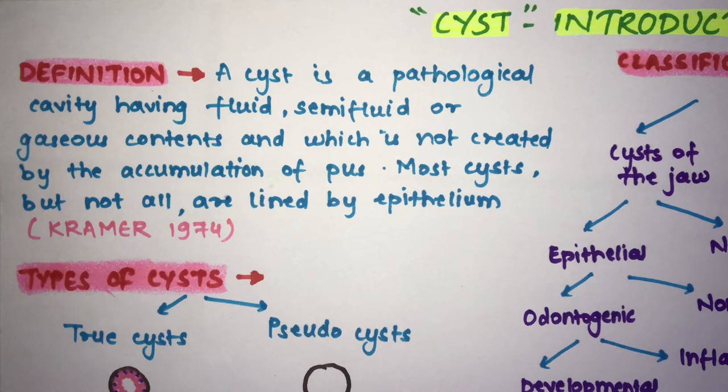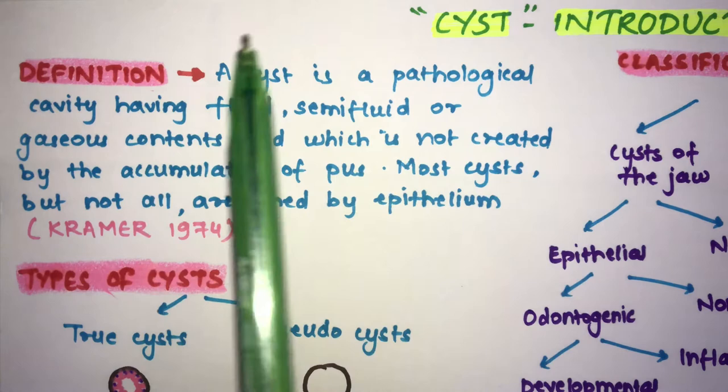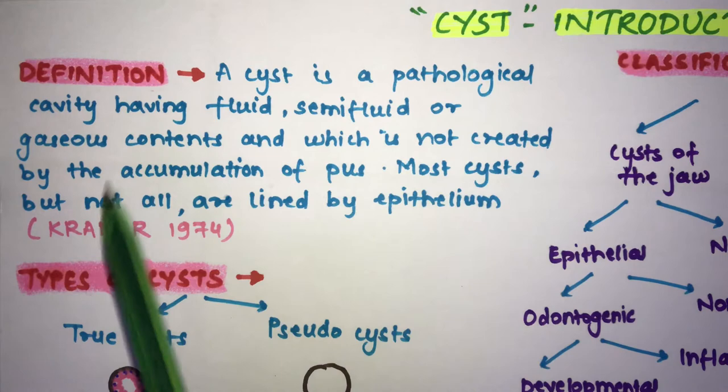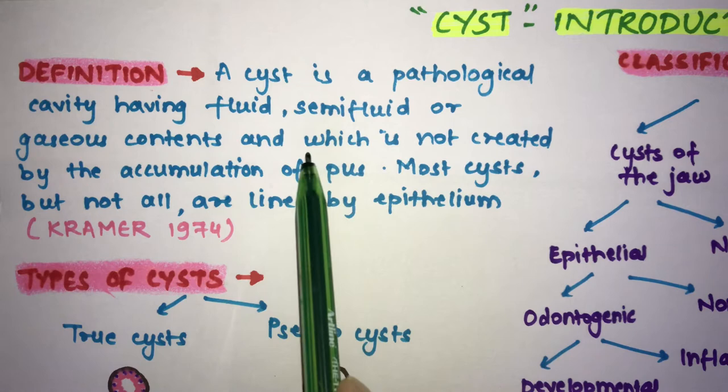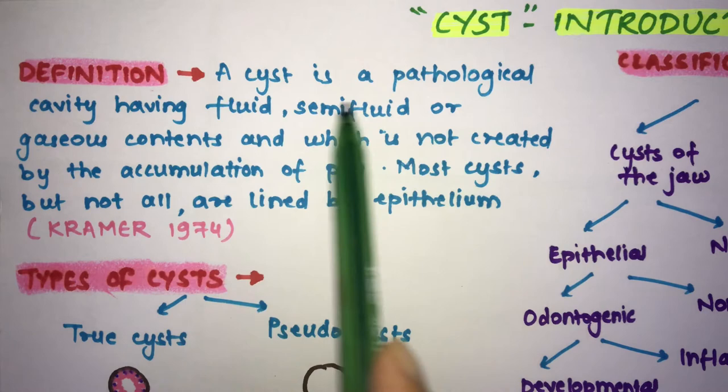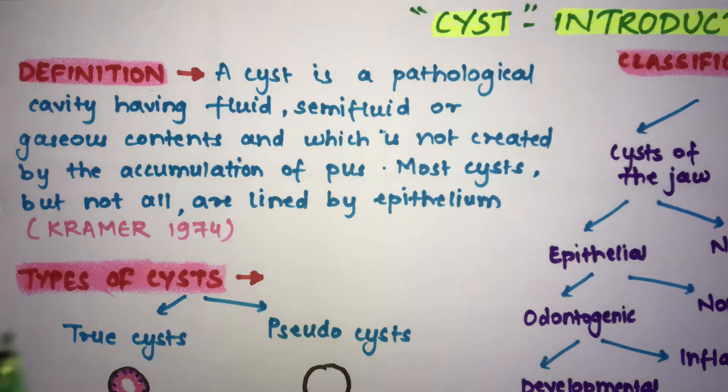The definition: a cyst is a pathological cavity which has fluid, semi-fluid, or gaseous content, and which is not created by the accumulation of pus. When a cavity is filled with pus, that means it is an abscess and not a cyst. So in a cyst there is no accumulation of pus.